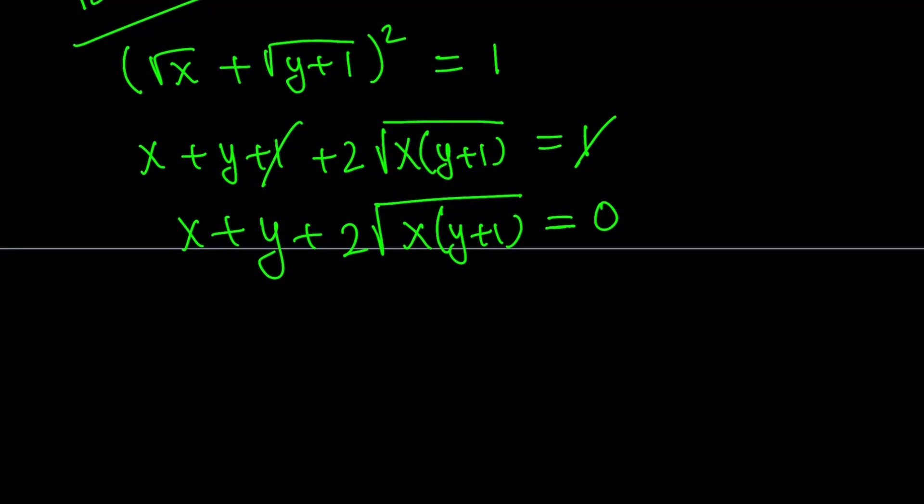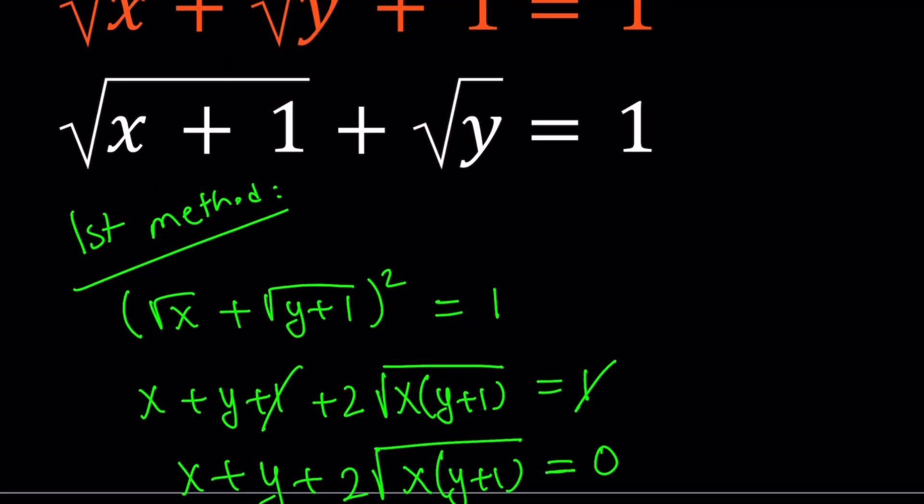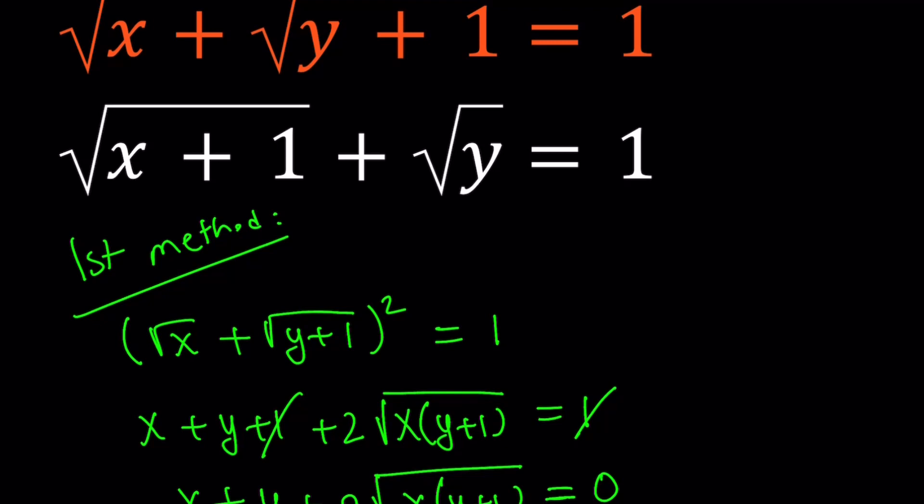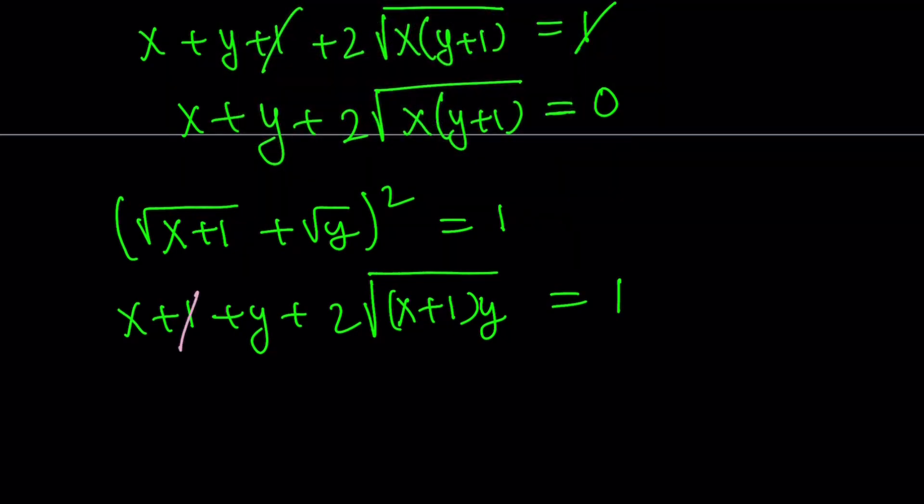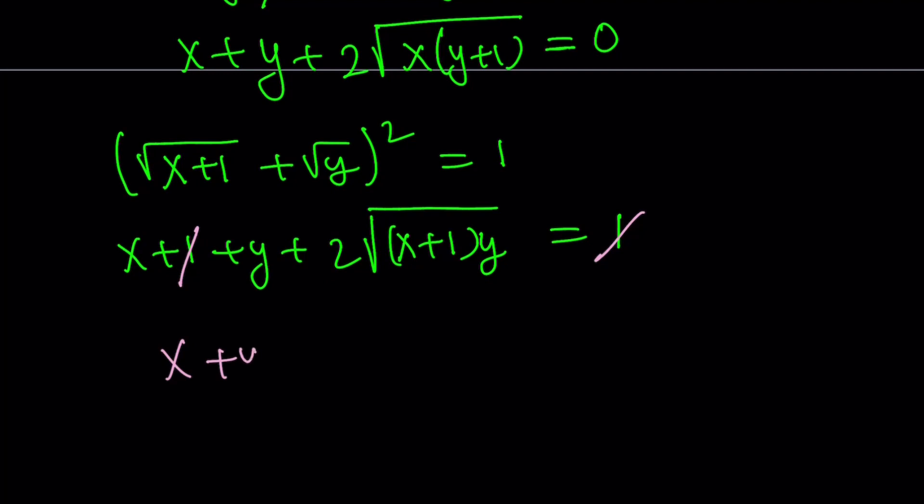That's going to be one of the equations that I'm getting. And then I'll do the same thing for the second equation. If you start off with x plus 1, square root of that, plus the square root of y, and square both sides, you're going to get x plus 1 plus y plus 2 times the square root of x plus 1 times y. And that is going to equal 1. And again, 1 is going to cancel out. That leaves us with x plus y plus 2 times, I might write the y first, x plus 1. This is equal to 0.